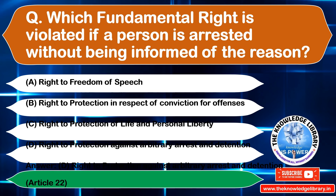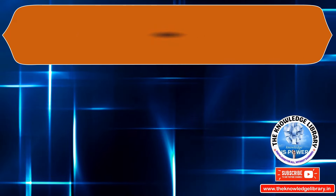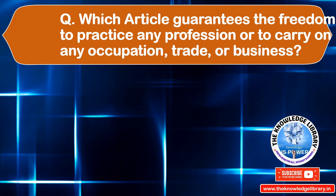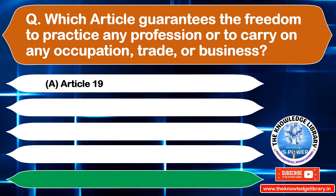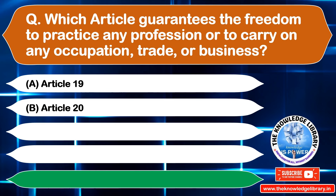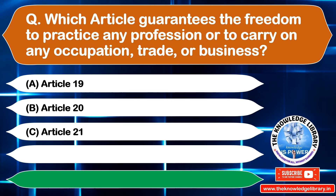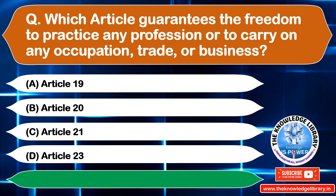The next question is: which article guarantees the freedom to practice any profession or to carry on any occupation, trade or business? Option A: Article 19, Option B: Article 20, Option C: Article 21, Option D: Article 23. The correct answer is Option A: Article 19.